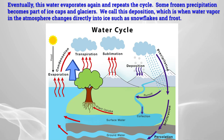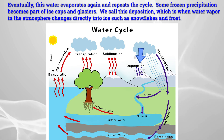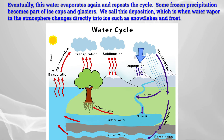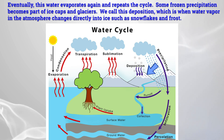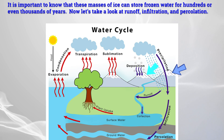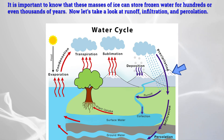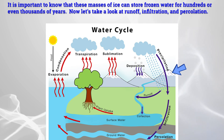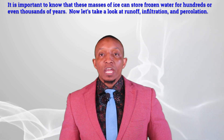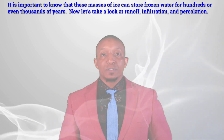Some frozen precipitation becomes part of ice caps and glaciers. We call this deposition, which is when water vapor in the atmosphere changes directly into ice, such as snowflakes and frosts. It is important to note that these masses of ice can store frozen water for hundreds or even thousands of years. Now let's take a look at runoff, infiltration, and percolation.